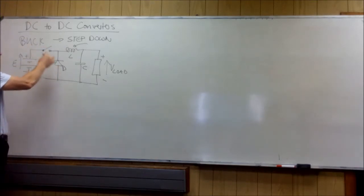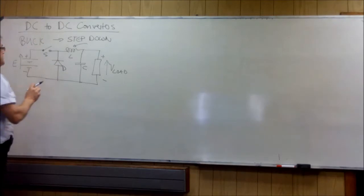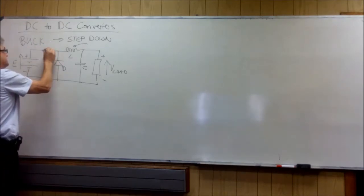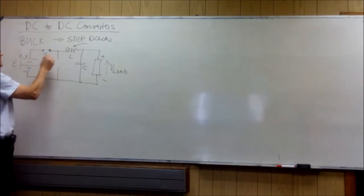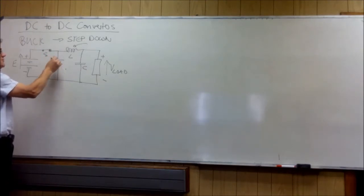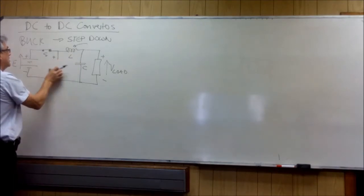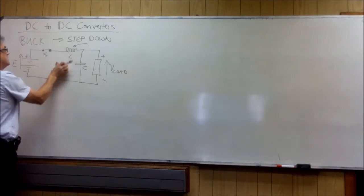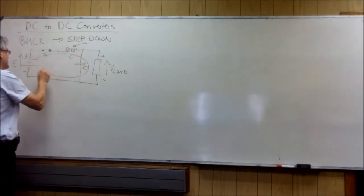Now that we know the diode and switch are complementary to each other — if I close the switch, then the diode will be placed under reverse bias, because there will be a positive on the cathode and a negative on the anode. So the diode will be reverse biased, and the circuit that we will see will be this circuit here, with current flowing through like that.